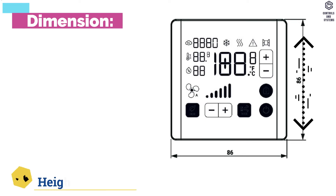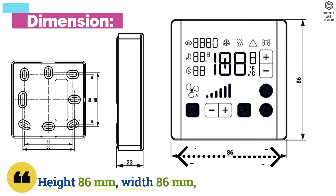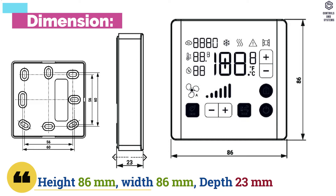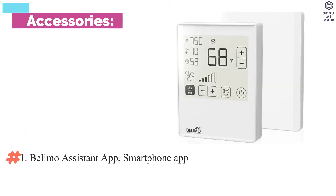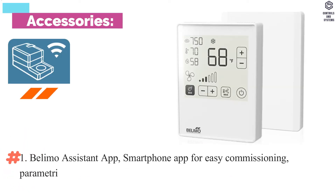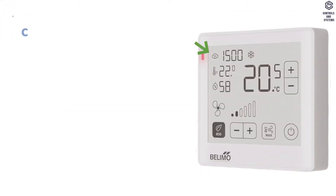Dimensions: height 86 millimeters, width 86 millimeters, depth 23 millimeters. Accessories include the Belimo Assistant App and a Bluetooth to NFC converter. Indicators: